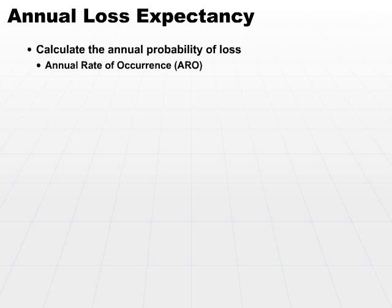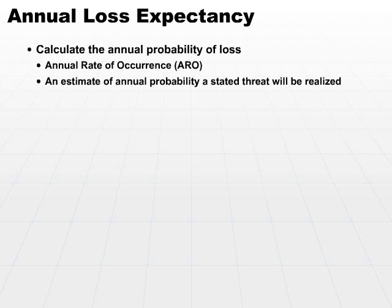The ARO basically says: I know what my loss is going to be, but how often am I likely to have a disk crash? You're going to have to go back to statistics, look at the particular machine classification, look at the history and your usage, and figure out exactly what the annual rate of occurrence will be. It's an estimate of the probability that a stated threat will be realized, and it's going to be slightly different for every type of stated threat.